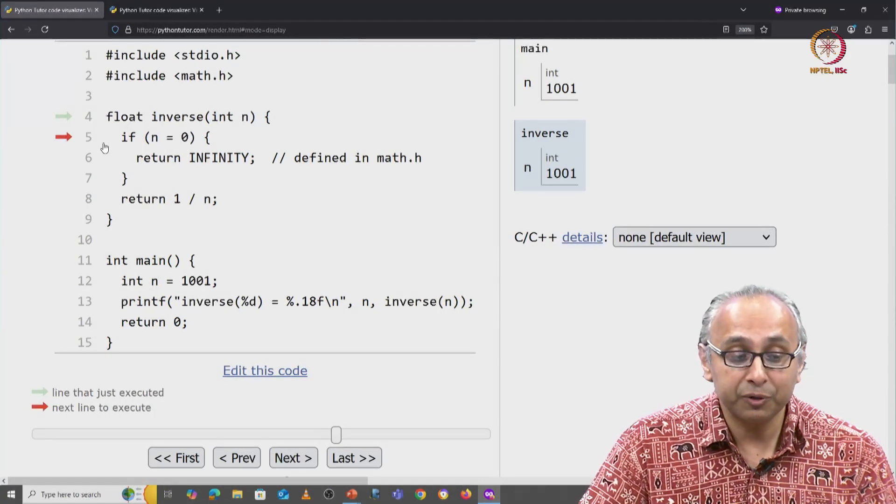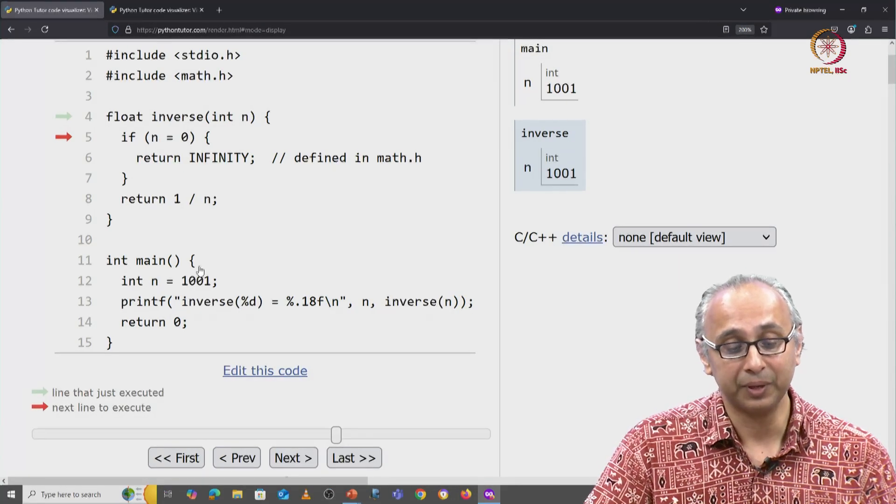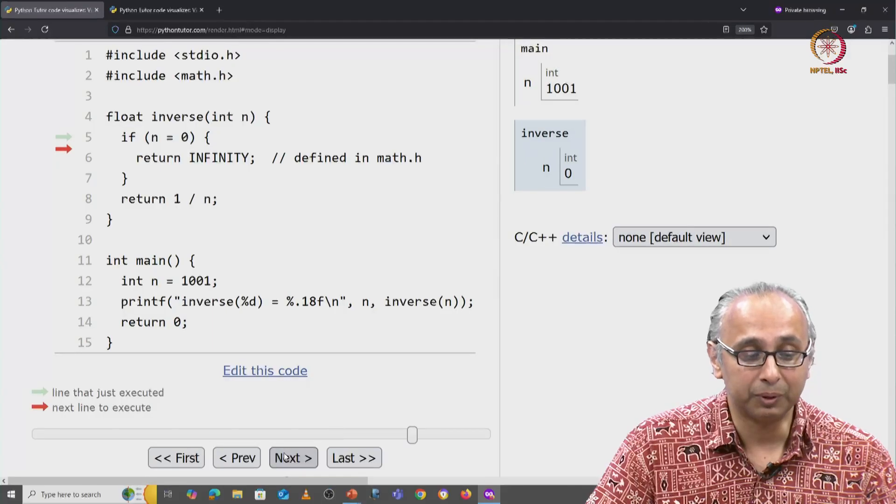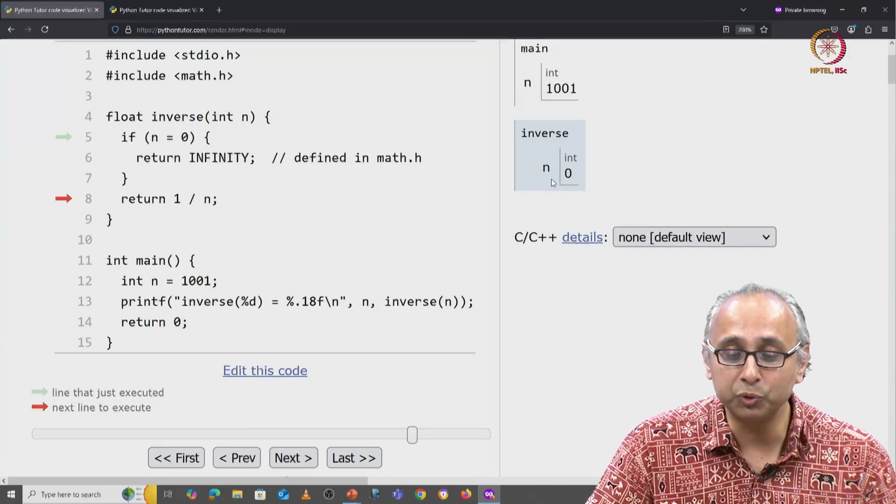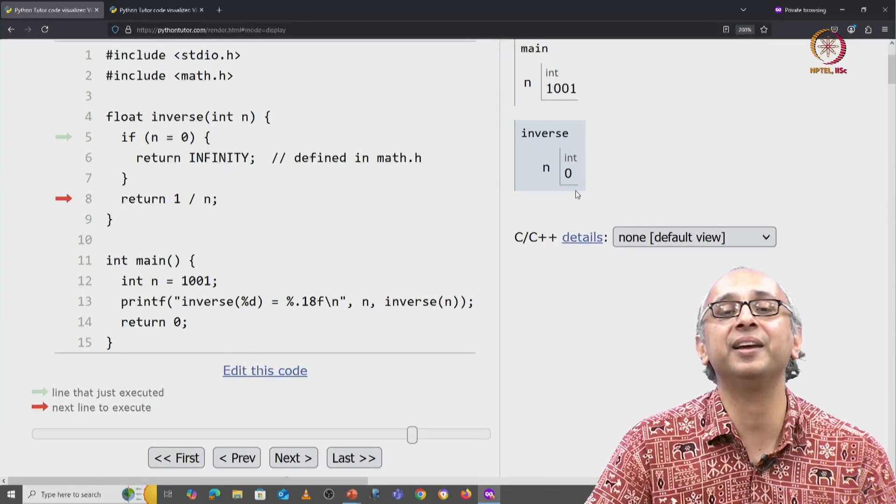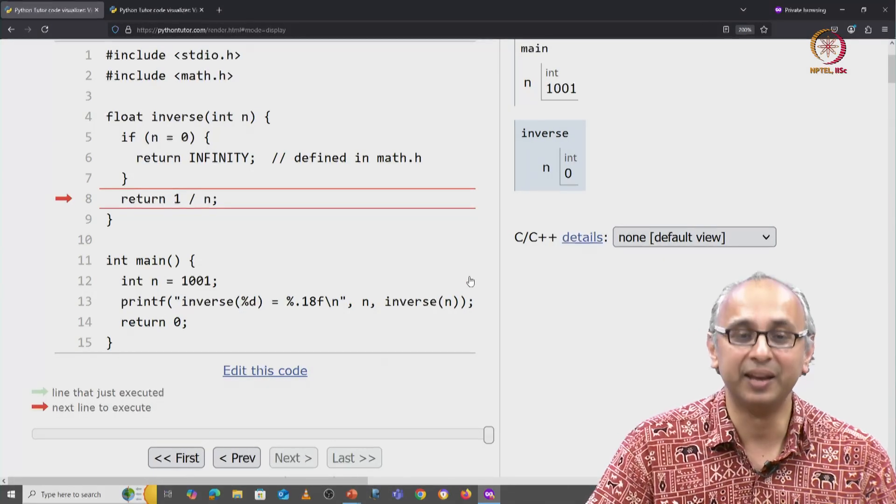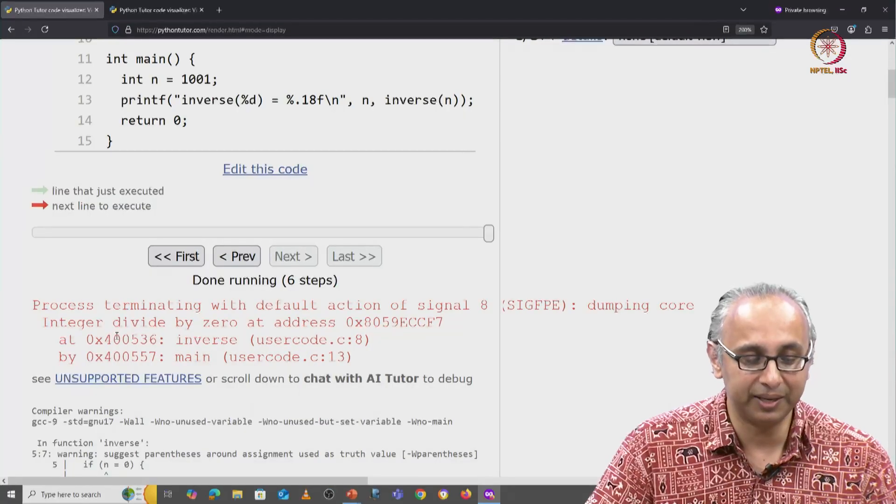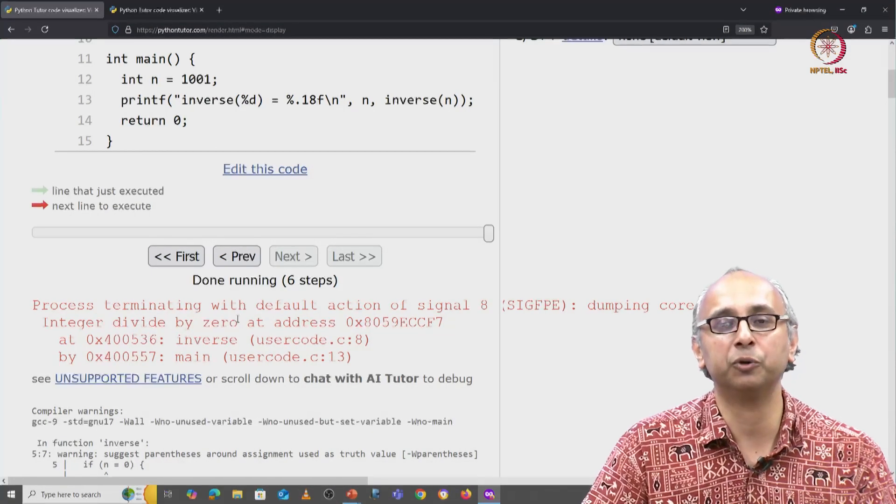So we will come to line 8 and now we are about to do 1 divided by 0 and that of course causes an error. The specific error is integer divided by 0 and that is why the code fails. But notice we did not get any kind of compiler error.